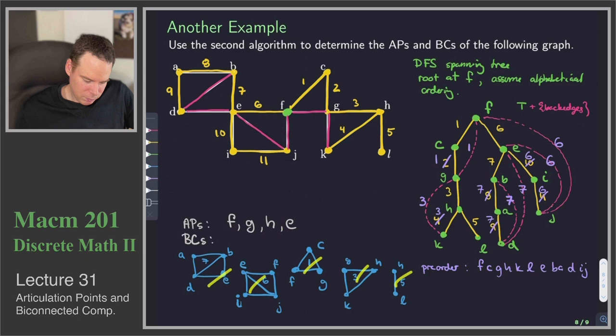And we can see the articulation points as well. So I'm going to highlight the articulation points in our diagram. That's an articulation point. This was an articulation point. This was an articulation point. And this was an articulation point.